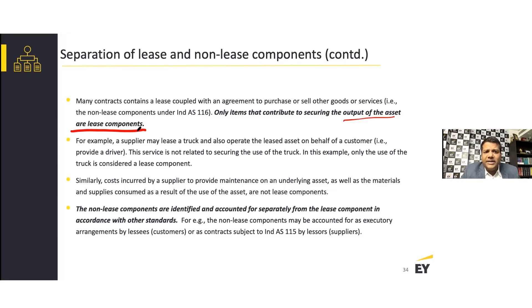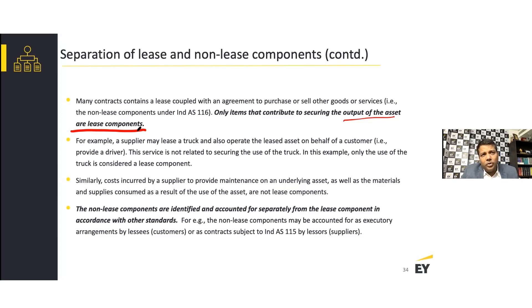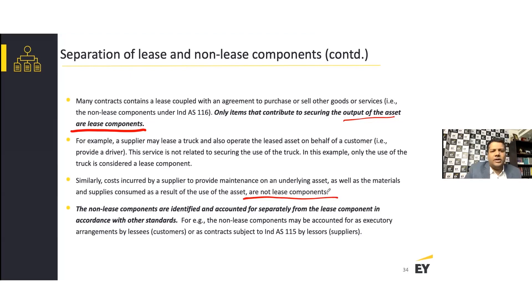Items that contribute to securing the output of the asset are lease components. Many contracts contain a lease coupled with an agreement to purchase or sell other goods or services — like maintenance, which is a non-lease component. For example, a supplier may lease a truck and also operate it on behalf of the customer by providing a driver and fuel. Only the use of the truck is the lease component; anything charged for the driving service is a non-lease component.